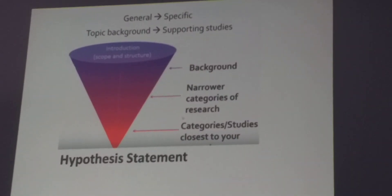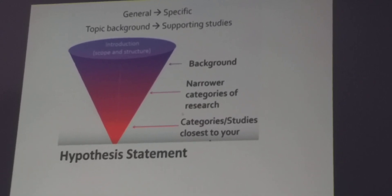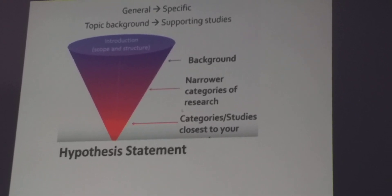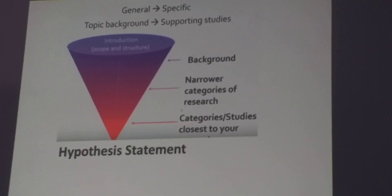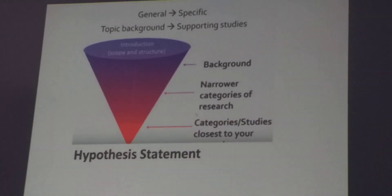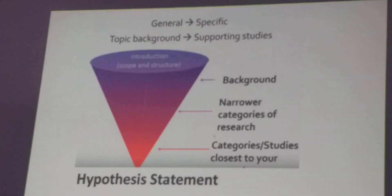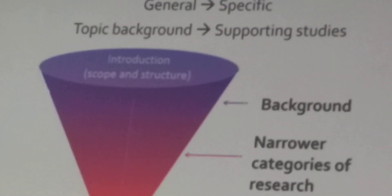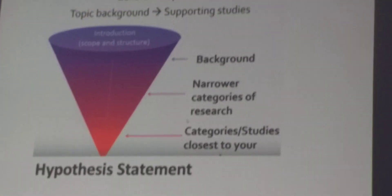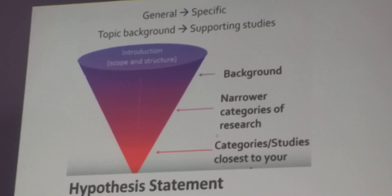As you can see in this diagram, you move from general to specific, providing topic background and supporting studies — the most important ones. Here we are following what is called the funnel approach: introduction, then scope and structure, then categories of research — categories of studies closer to your study — presenting your hypothesis statement and shedding light on the literary gap in the conclusion.